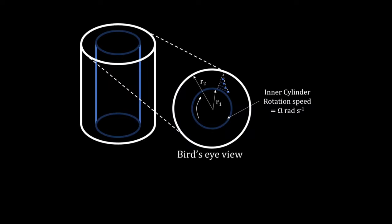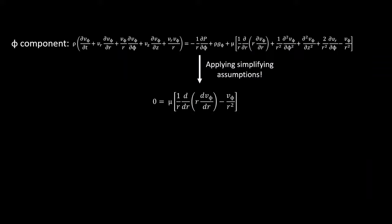If we assumed purely angular flow without turbulence, we can simplify to obtain the angular velocity profile.